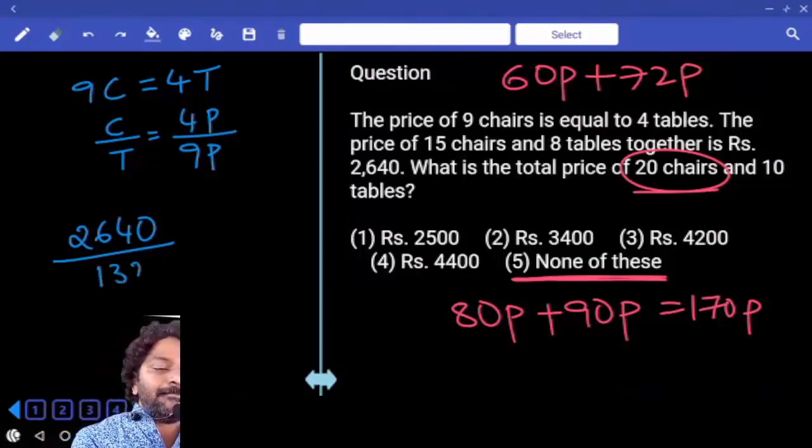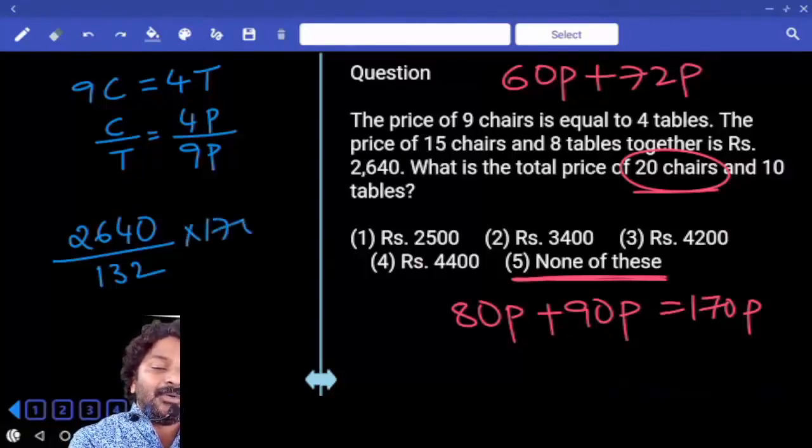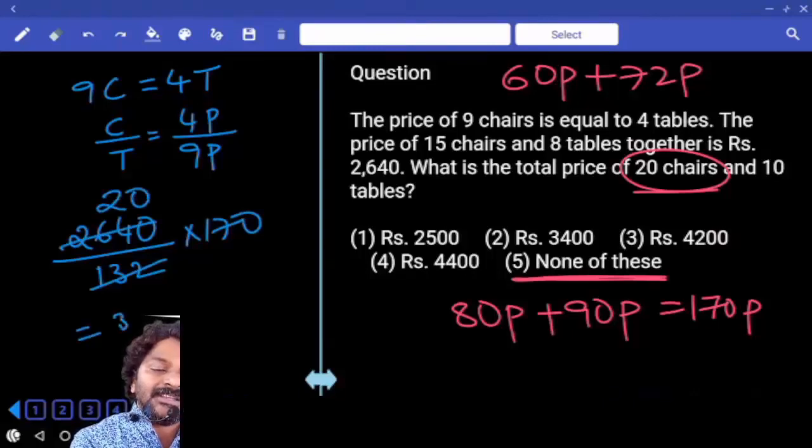1 part is 2640 by 132. And we want to calculate 170 parts. That is into 170. 132, 20 times. Answer: 3,400.